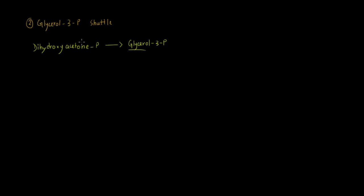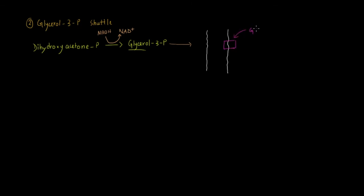In the process of converting dihydroxyacetone phosphate to glycerol-3-phosphate, one NADH gives up its electron and gets oxidized to NAD+. This glycerol-3-phosphate then goes to the mitochondria. Embedded onto the inner membrane of the mitochondria is the enzyme glycerol-3-phosphate dehydrogenase — the same enzyme, but this one is in the inner mitochondrial membrane, whereas the first was in the cytosol.